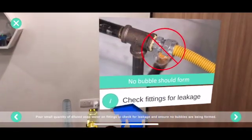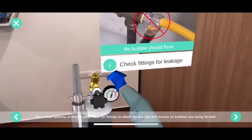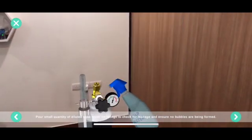Pour a small quantity of diluted soap water on fittings to check for leakage and ensure no bubbles are being formed.